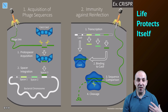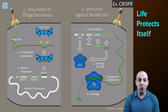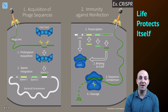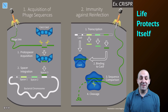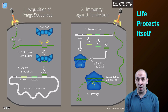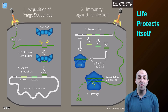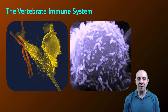Before we go further, I want to make the point that immunity is not a vertebrate-only thing. All life protects itself in different ways. We've talked previously about CRISPR in bacterial cells and how we can apply it in biotechnology. The CRISPR system evolved in bacterial cells as a bacterial immune system that prevents reinfection by the same virus by establishing sequences of DNA that correspond to the viral chromosome, so that the cell can recognize and destroy it when reinfected.